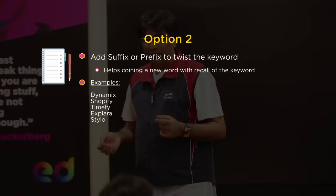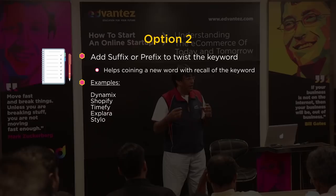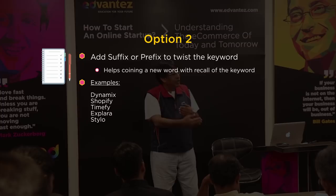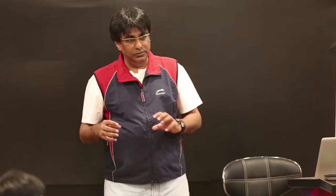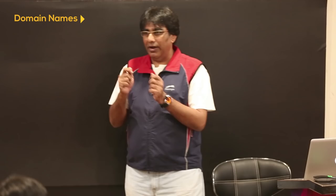By twisting the word, you still want to own a word in the customer's mind and you are closer to it. For example, if I want to own the word 'style' but that domain isn't available, I make it Stylo. Or if I am in a travel business and I want to own the word 'explore' but the domain isn't available, I make it Explara.